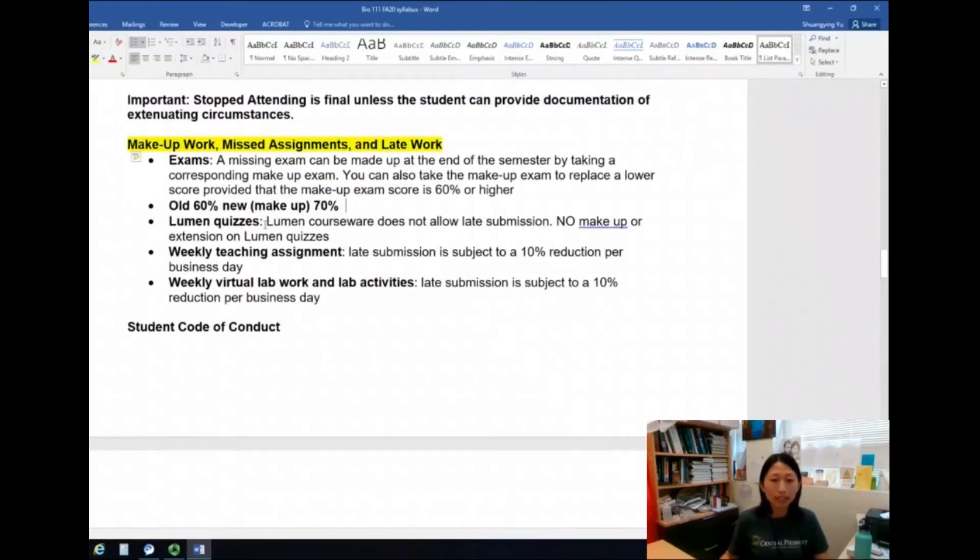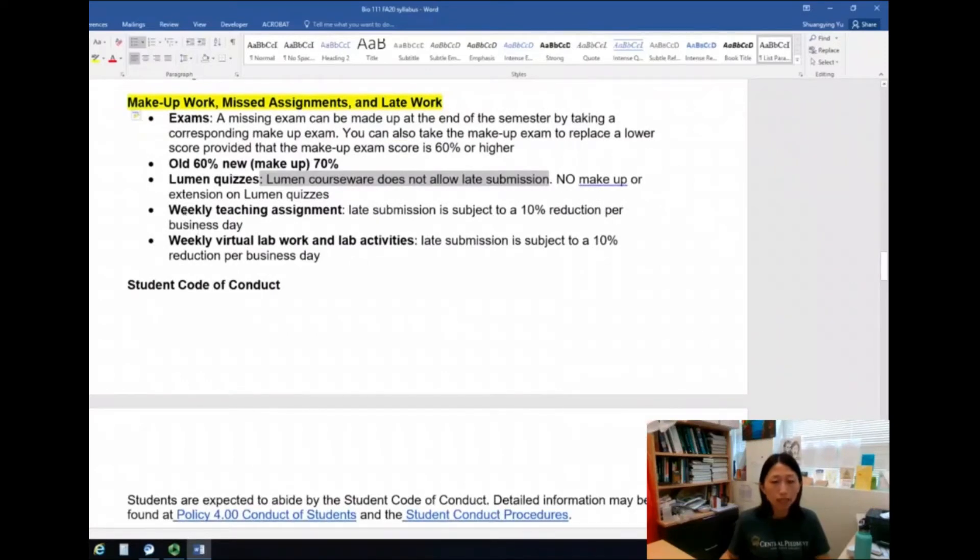Lumen quizzes. Now, because of the setup from Lumen website, we do not allow late submission. So make sure each week you complete Lumen quizzes. For a weekly teaching assignment and weekly lab work, there is a 10% reduction per business day. So the sooner you can turn them in, the fewer points you will lose. This is important. If you miss it, don't freak out. You still have a chance to turn in late work, but just make sure you turn it in as soon as you can.